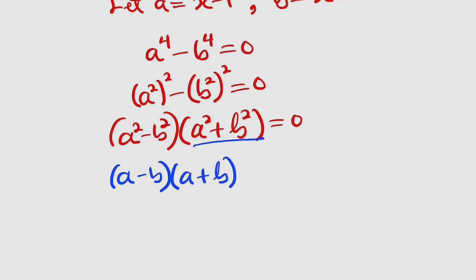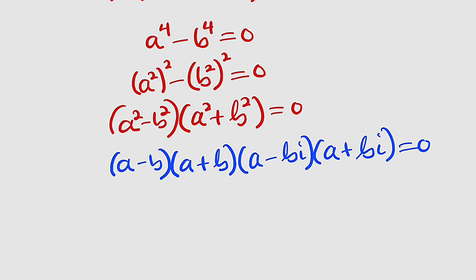We can write it as a minus b multiplied by a plus b. This is sum of two squares. How do we factorize it? You have to introduce complex number. So this will be a minus b i multiplied by a plus b i. This is equal to 0.